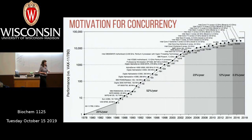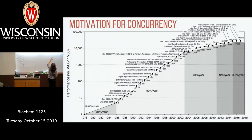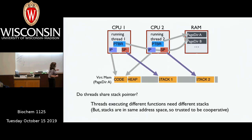A while ago Moore's law was giving us great improvement in processor speed every year. It was really getting faster just at the architecture level — instructions were executing more quickly and you didn't have to do much in software. But at some point that performance improvement flattened out, and so the only way we're getting performance improvements now is to add multiple cores or processors to a single machine and use all of those cores simultaneously.